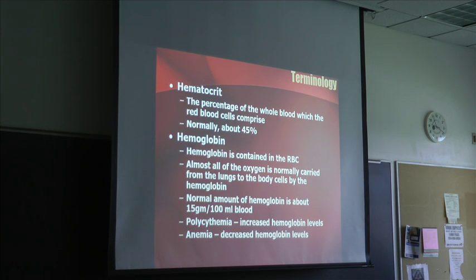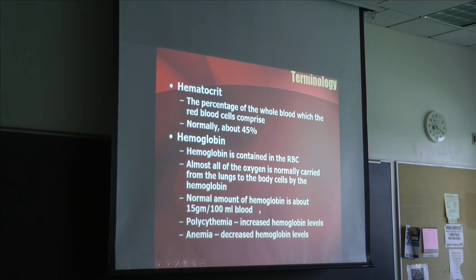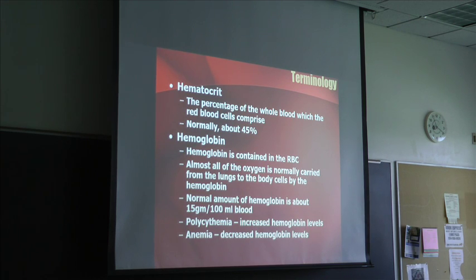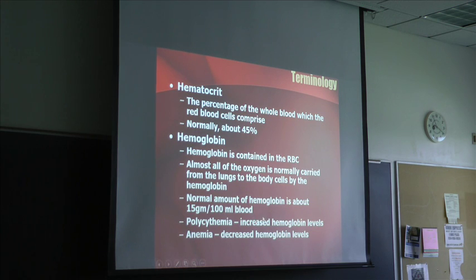A normal amount of hemoglobin is about 15 grams per 100 mLs of blood — also written as grams percent. When you see it in your book, instead of writing 100 mLs of blood, they'll put grams and then just a percent sign. So grams per 100 mLs of blood is the same thing as grams percent.